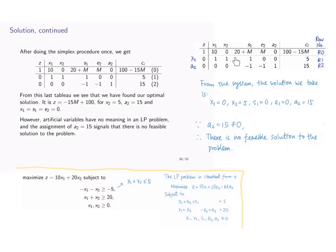There is no more negative coefficients for those variables at row 0. We shall take x1 equals 0, x2 equals 5, e1, e2 equals 0, a2 equals 15, and z equals this value. This solution is optimal.